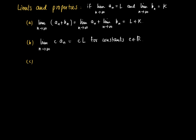Another property is that we can also take products. The limit as n goes to infinity of a_n times b_n is the same as the limit as n goes to infinity of a_n times the limit as n goes to infinity of b_n, which equals l times k.